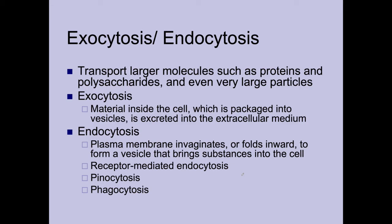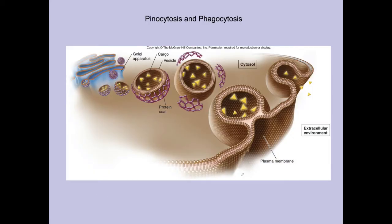There are three types of endocytosis. Phagocytosis takes in solids — the vesicle formed is called a phagosome. Pinocytosis takes in fluid and is called cell drinking. When these vesicles are formed, proteins called clathrins attach to the outside of the vesicle as a protein coat. This coating signals to the cell that the vesicle needs to go to the Golgi apparatus for processing — specifically to the cis end.